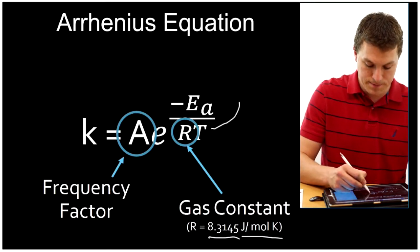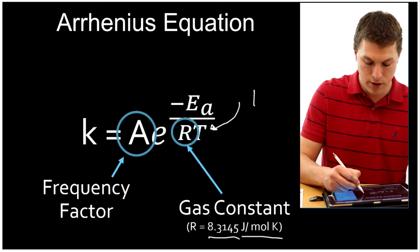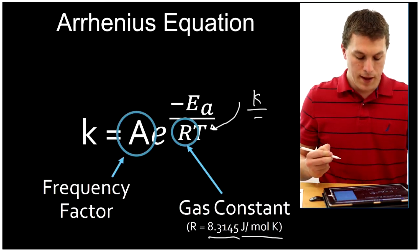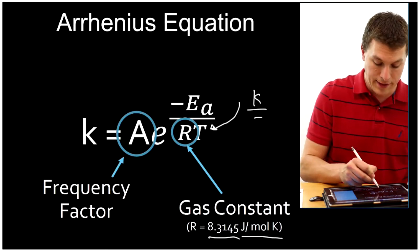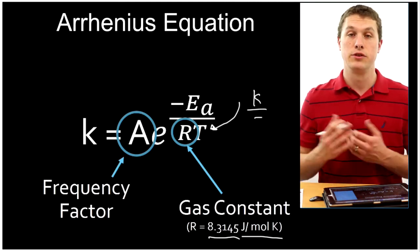Lastly, we have temperature, which is in Kelvin, always. And this equation, when you take the frequency factor and multiply it by the exponential of these variables, gives you the rate constant.